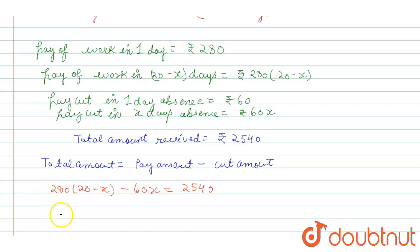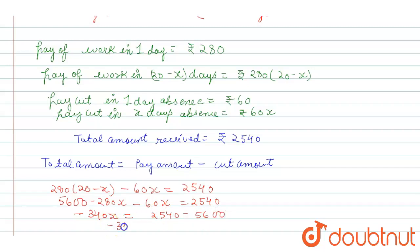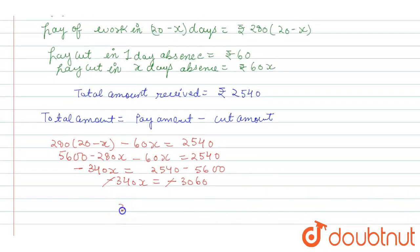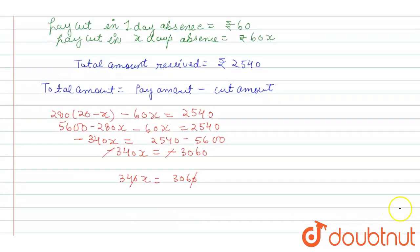Expanding: 5600 minus 280x minus 60x equals 2540. This gives minus 340x equals 2540 minus 5600, so minus 340x equals minus 3060. The negatives cancel out, giving 340x equals 3060. Therefore x equals 3060 divided by 340, and 34 nines are 306, so x equals 9.